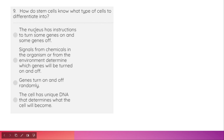How do stem cells know what type of cells to differentiate into? The option that the nucleus has instructions to turn some genes on and some genes off is the wrong answer. The correct option is: signals from chemicals in the organism or from the environment determine which genes will be turned on and which will be turned off.